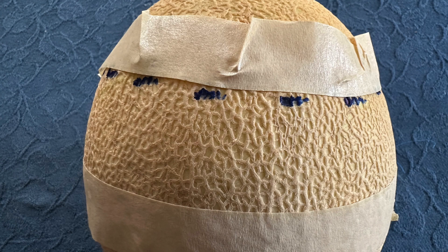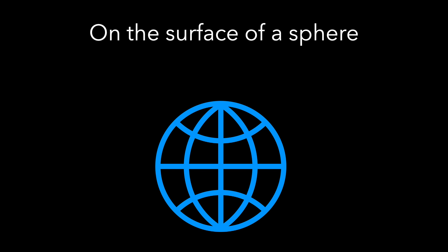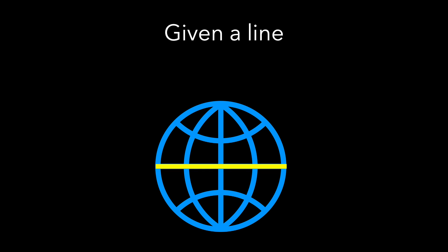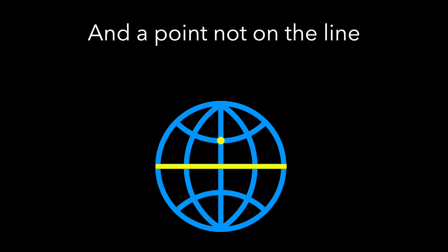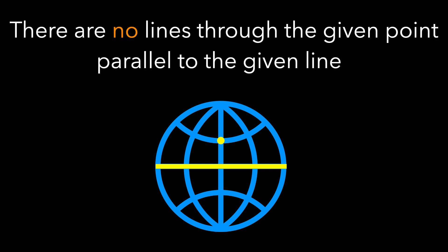And you see that the tape crinkles. The latitude line is not a line — it's not a great circle. So on the surface of a sphere, given a line (which we know to be a great circle) and a point not on that line, there are no lines through the given point parallel to the given line. I know we haven't proved this, but actually we're looking at this a little backwards.